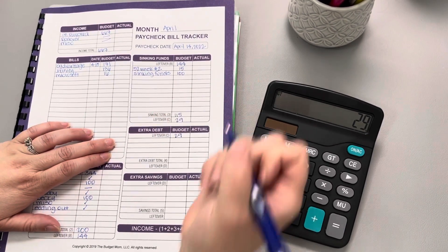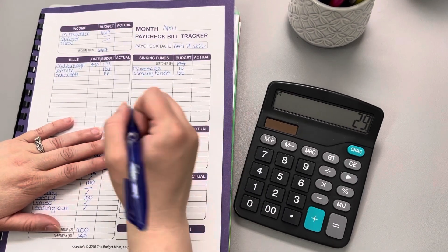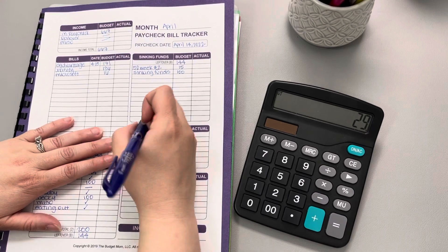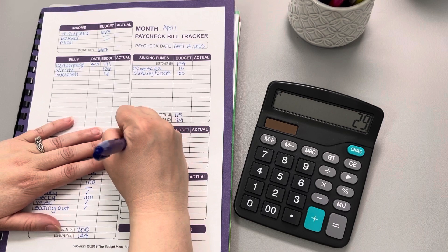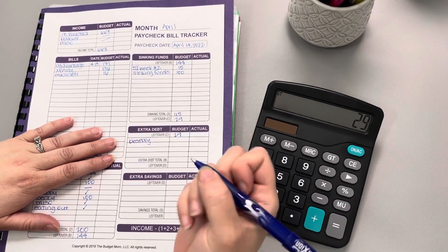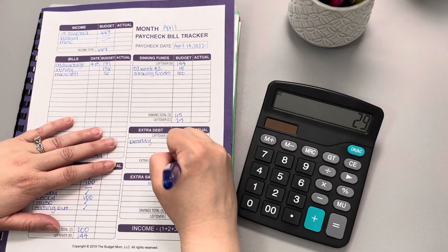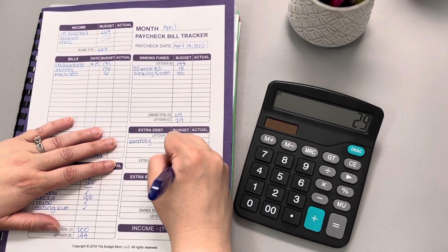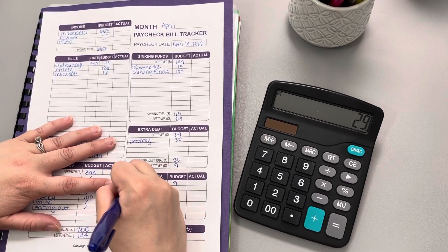I guess I jumped ahead of myself there for a second. So as you know, the bill that we are targeting to pay off this month or our snowball bill is Best Buy. I'll go ahead and budget that we're going to give it $20. And taking the $20 from the $29, it leaves us with $9. So those $9, I'll leave in our account as a rollover.